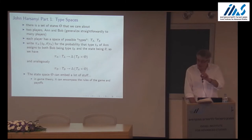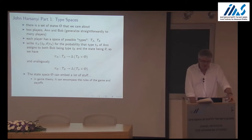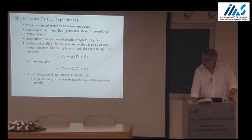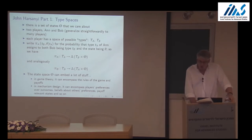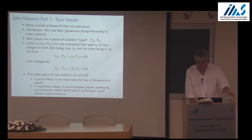In the context of game theory, it's important that this state space can be quite rich — we can embed a whole lot of stuff conceptually about which there's uncertainty, including the rules of the game and the payoffs. In mechanism design, what's important is that it can encompass players' preferences about outcomes. In mechanism design, we don't start with the game, but we do need to talk about what players' preferences over actions are, what their beliefs about other players' preferences are, and so on.